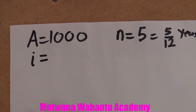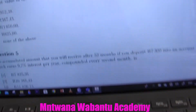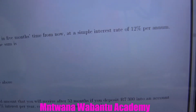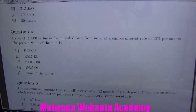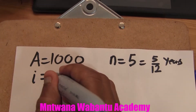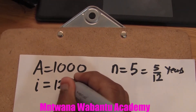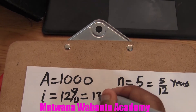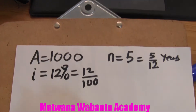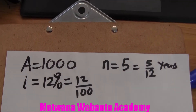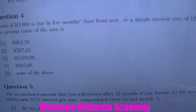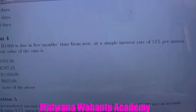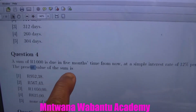Now for the interest rate — be careful here. The interest rate is 12%, so we write interest rate equals 12 over 100. And the unknown we're looking for is the present value, in other words, the principal P.